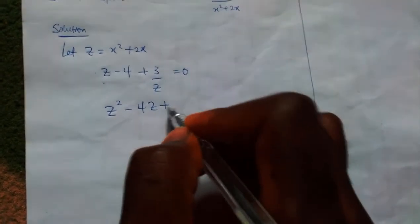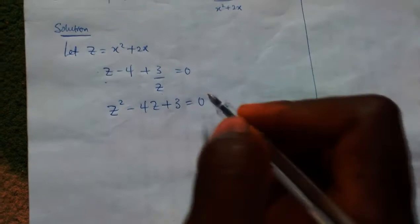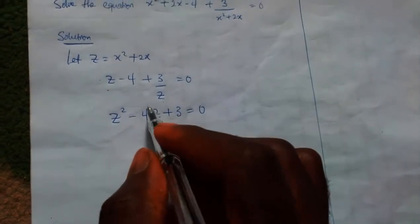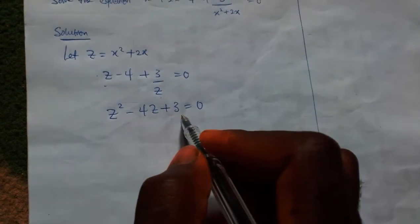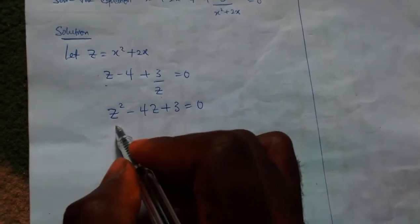Now from here, minus 3 minus 1 gives us minus 4, and minus 3 times minus 1 gives us plus 3. So I have it as z minus 3 times z minus 1 equals zero.